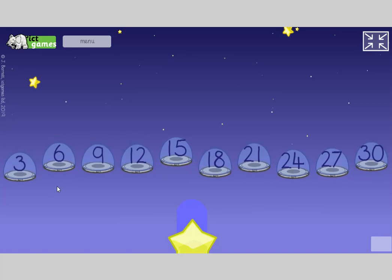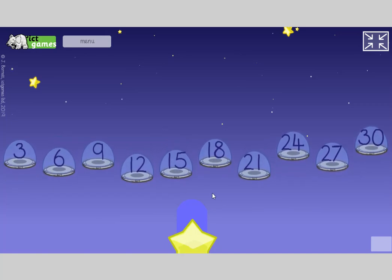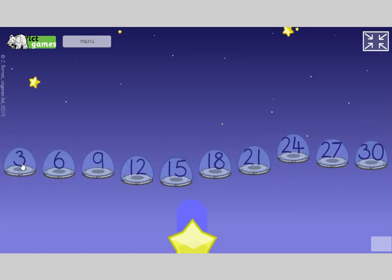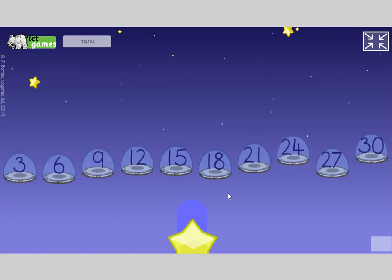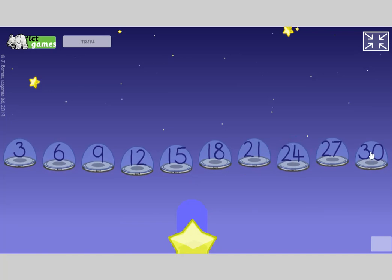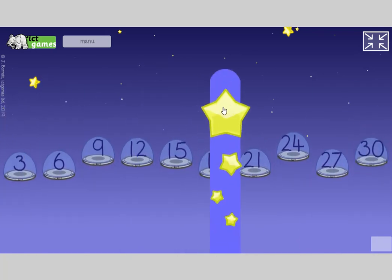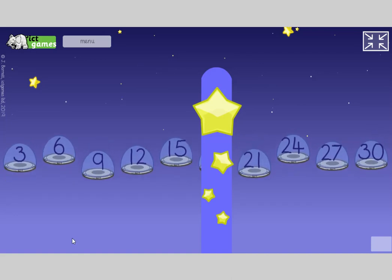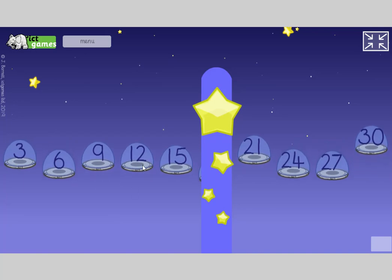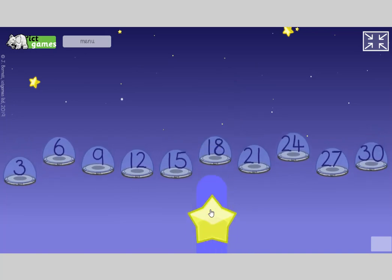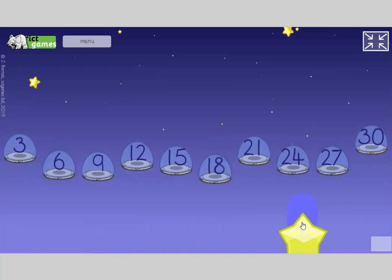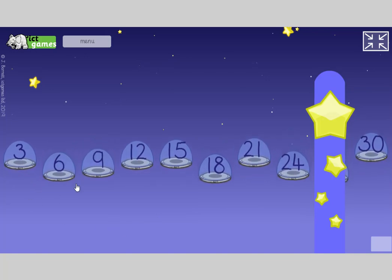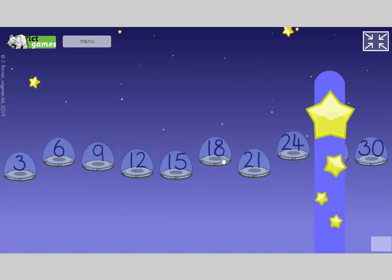Okay, let's go to counting in threes. Come on, Year 2s, counting in threes: 3, 6, 9, 12, 15, 18, 21, 24, 27, 30. And again: 3, 6, 9, 12, 15, 18, 21, 24, 27, 30. Right, close your eyes. Well done, Year 1s, if you're trying to join in with this, because this is tricky stuff.